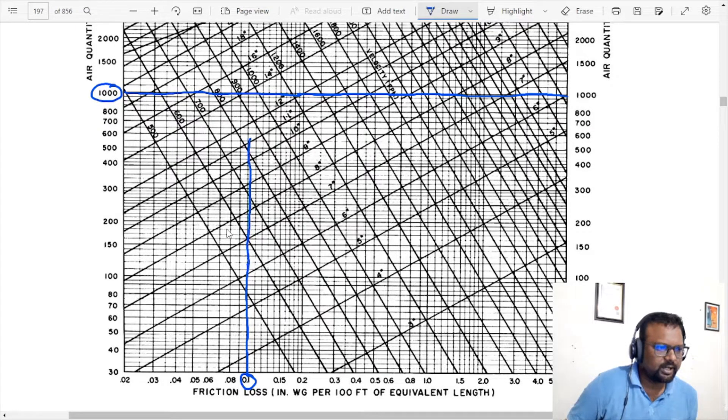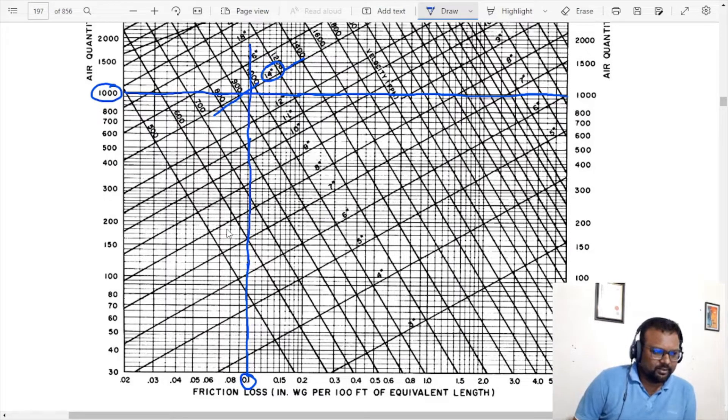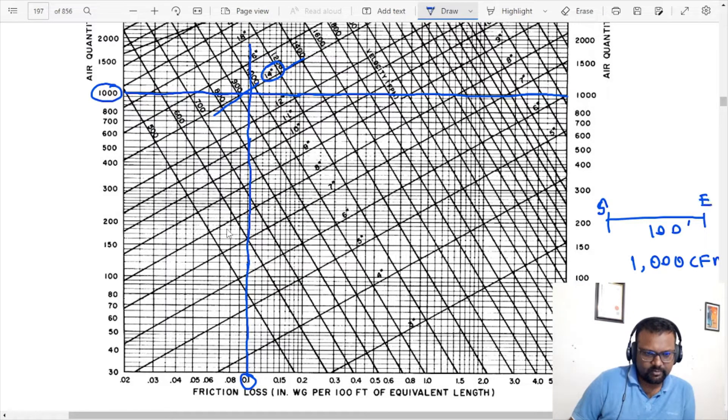This is the horizontal line, which is the round duct size, which is 14 inches. Given that the diameter of the round duct is 14 inches, let's say that the starting point and end point have a friction loss of 0.1 inch of water.